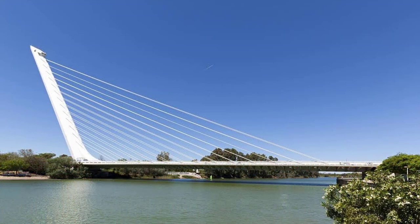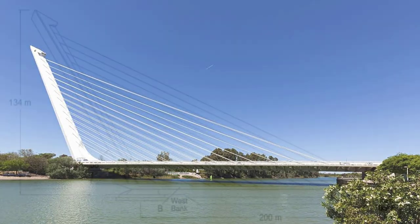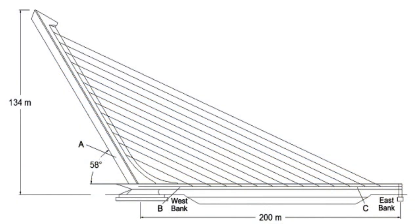Before presenting the simulation models, we shall begin with a quick overview of the structural elements of the Alamillo Bridge necessary to understand its construction. The Alamillo Bridge is a cable-stayed bridge. Its deck is 200 meters long and is supported by 13 pairs of cables that run from the deck to a massive single pylon on the west bank that rises away from the deck at an angle of 58 degrees to a vertical height of 134 meters.